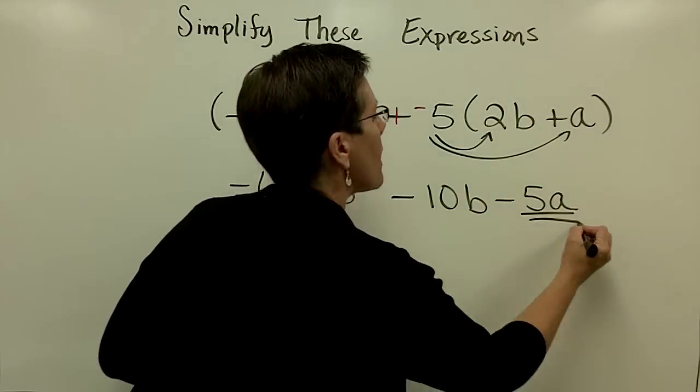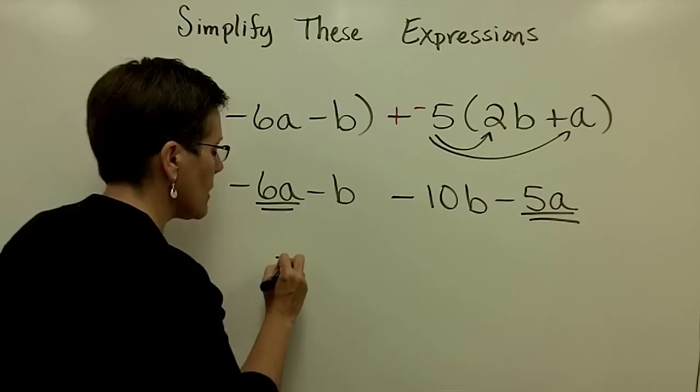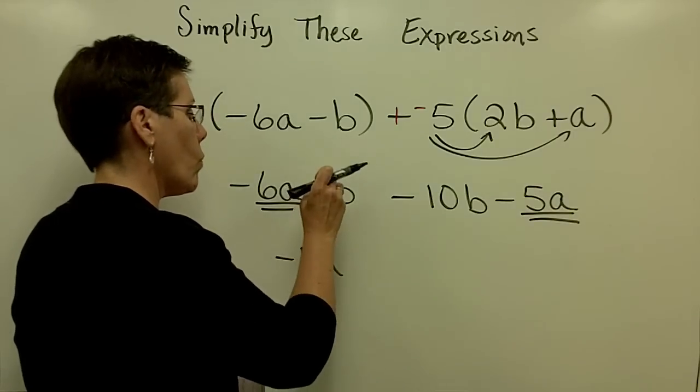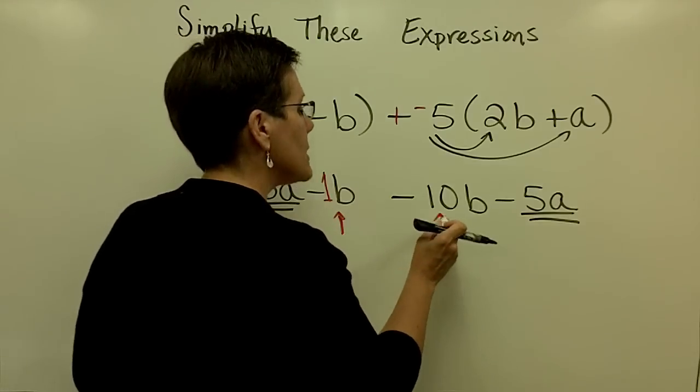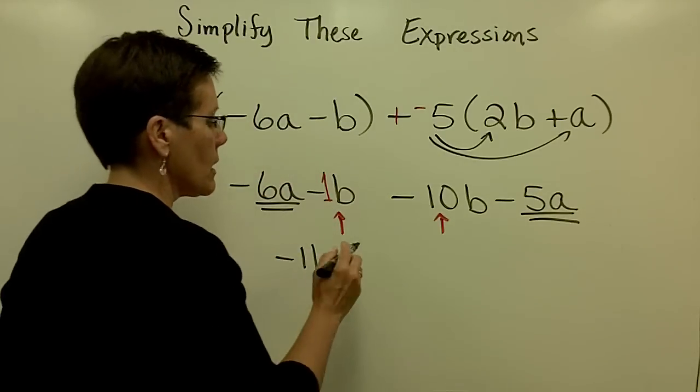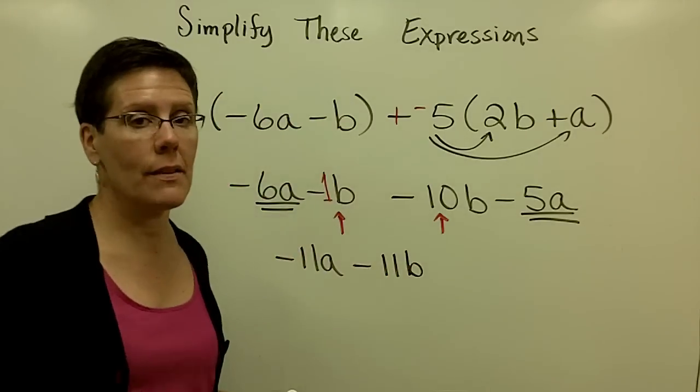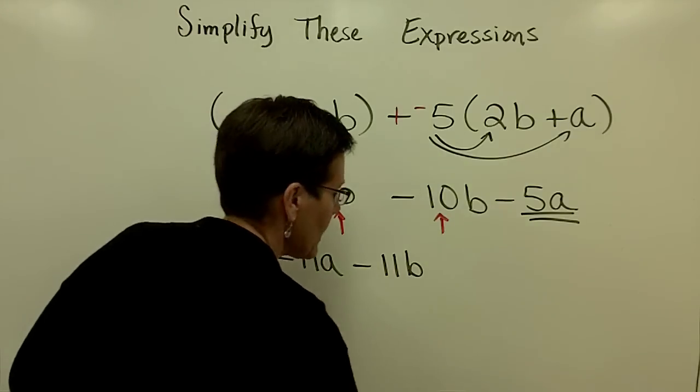So I'll collect my like terms. So 6a, a negative 6a, minus 5a is a negative 11a. And then a minus 1b and a minus 10b combines to be a minus 11b. I cannot do anything else with that because those are not like terms. One is apples and one is bananas. So they can't be combined.